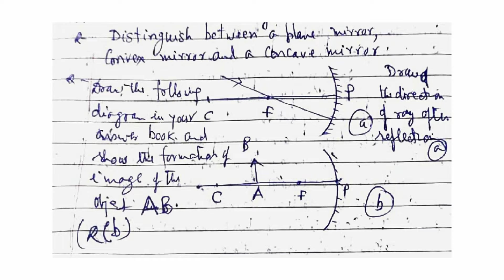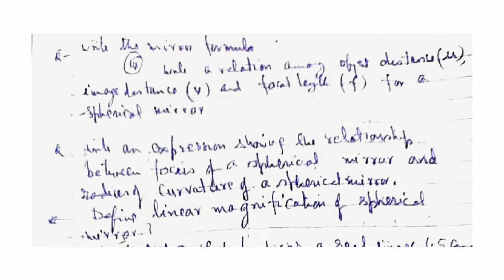Draw the following diagram in your answer book and show the formation of image of object AB, showing the direction of the ray after reflection. Write the mirror formula — the relation among object distance, image distance, and the focal length for a spherical mirror. Write an expression showing the relationship between the focus of a spherical mirror and its radius of curvature.